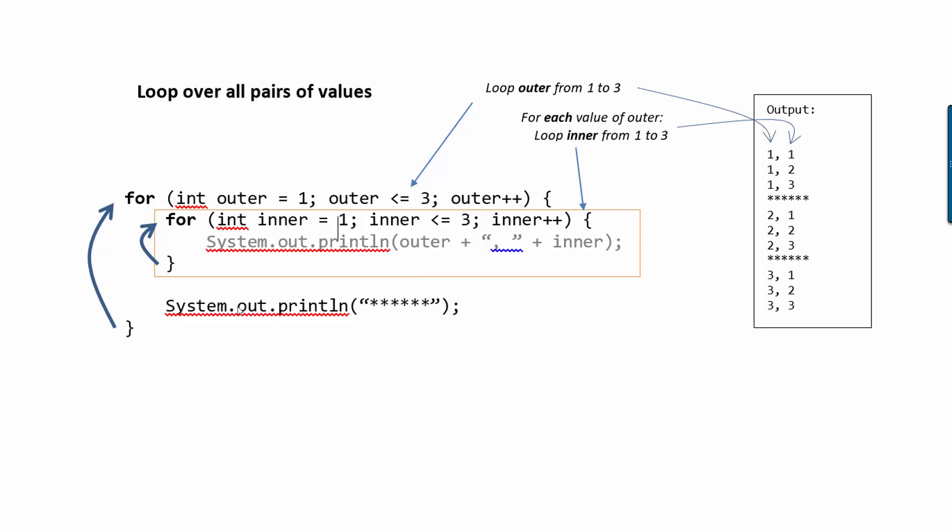And then once that for loop's done, we print stars once here. And now finally, we're at the bottom of the block for the outer for loop. And we go back up to the top, add one to outer. So now it's equal to two. And then when outer equals two, we do the same thing.